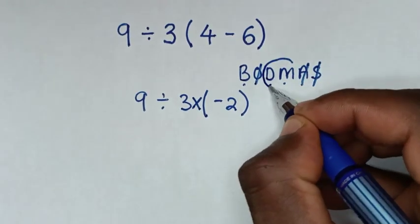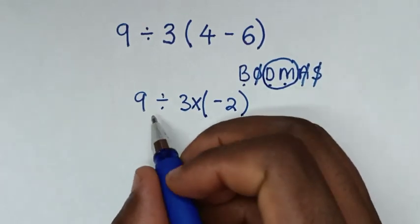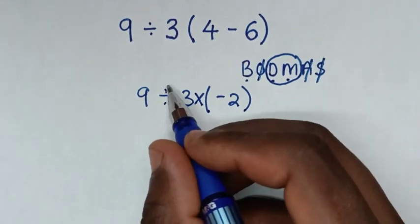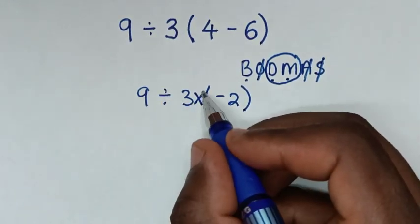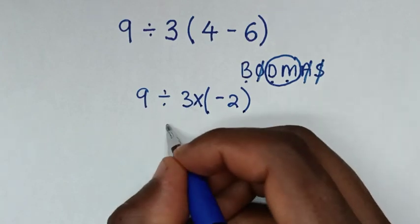We're left with division and multiplication. According to which comes first in our problem, it starts with division then multiplication. So we start by doing 9 divided by 3, which equals 3.